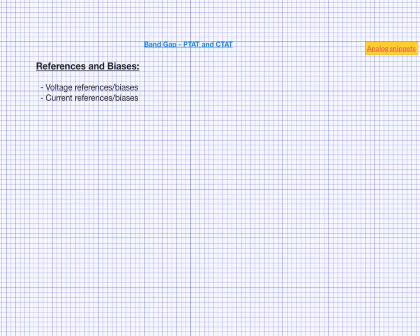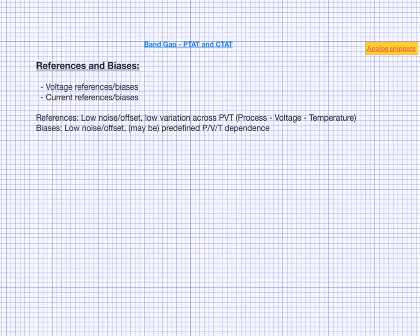References should have low noise, low offset, and low variation across PVT corners. Biases should also have low noise and low offset, but sometimes they may require to track a particular variation in process, voltage, or temperature. What this means is that sometimes they may need to vary with process or temperature or voltages to track their variation.